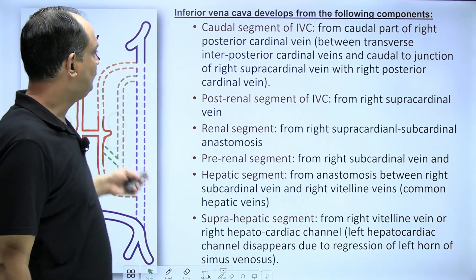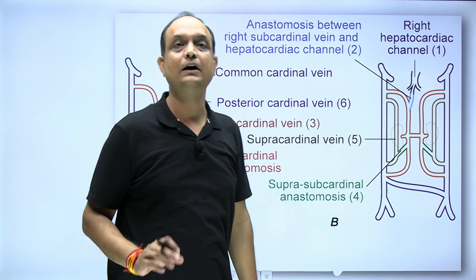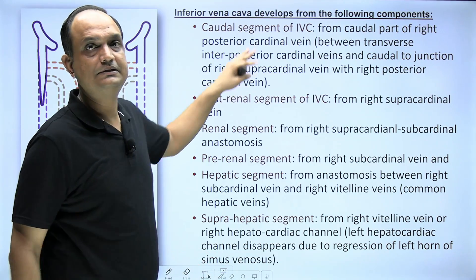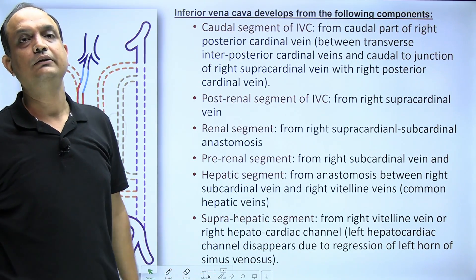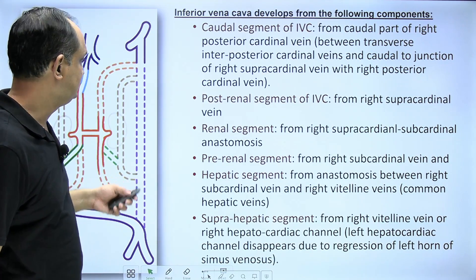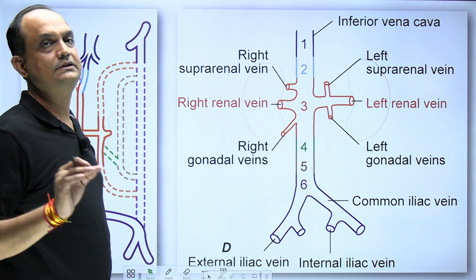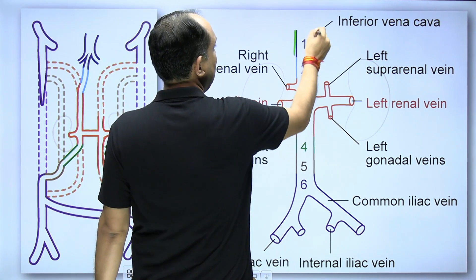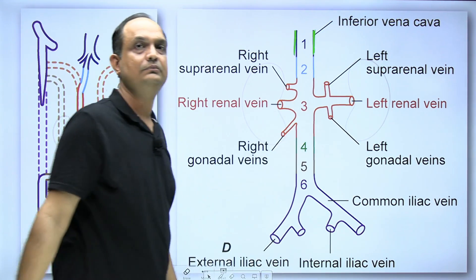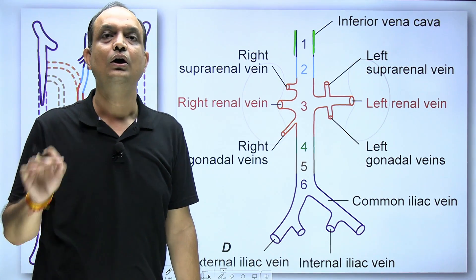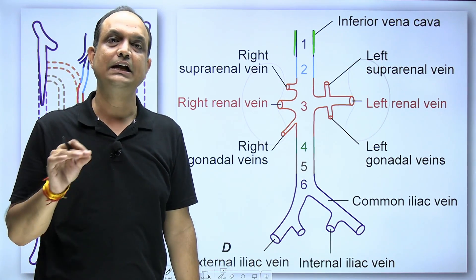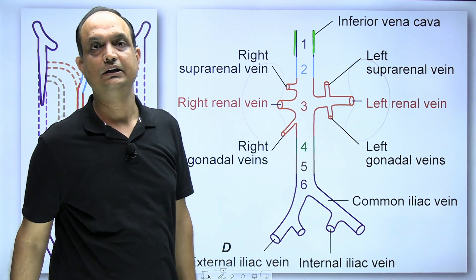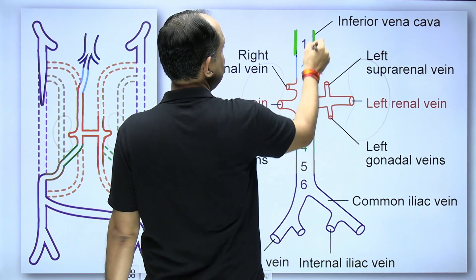The inferior vena cava always develops in segments. The most cranial end of the inferior vena cava opens into the right atrium and develops from the hepatocardiac channel or dilated right vitelline vein. This is the first portion — the terminal (cranial) end of inferior vena cava. Below this, there is an anastomosis between the right hepatocardiac channel and the right side sub cardinal vein, forming the second segment.